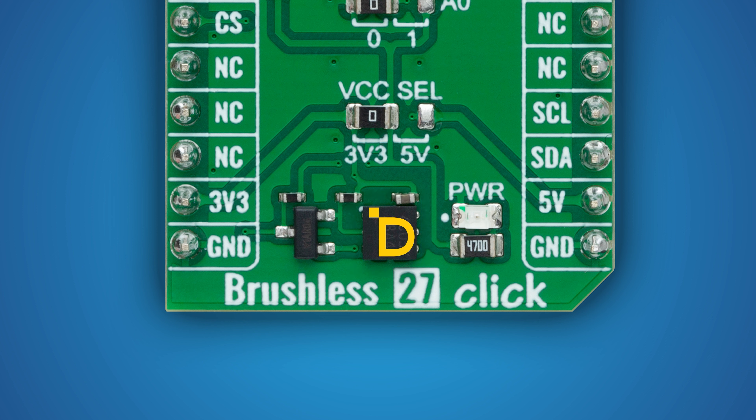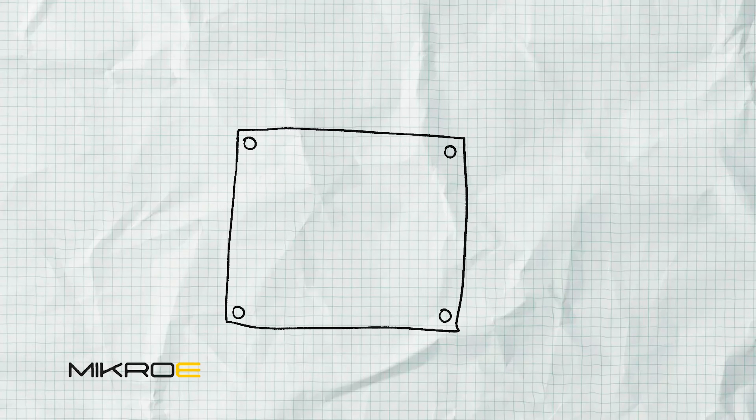Focus on the upper part of the click board. The upper part performs the main functionality. To be more concrete, this Brushless 27 Click basically is going to control some BLDC motor. Combining this upper part of the click board, which is the main logic, with the ID silicon in the lower part, you get the click board identification feature in your embedded project.